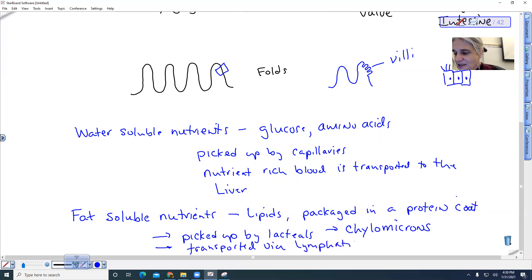But in the lymphatic system, it gets diluted and it travels up and it re-enters venous circulation, your veins up near your neck region in your jugular. So eventually it'll go into circulation, but not until it's like diluted by the rest of the fluid in your lymphatic system.